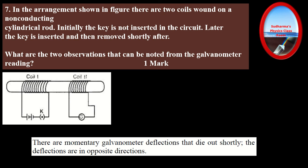Question number seven: in the arrangement shown, there are two coils wound on a non-conducting cylindrical rod. Initially the key is not inserted; later the key is inserted and then removed shortly after. What are the two observations from the galvanometer reading? This is about electromagnetic induction. When you switch on the circuit, there is a momentary deflection in the galvanometer. When you switch off, there is again a deflection but in the opposite direction. The deflections are momentary and die out shortly.